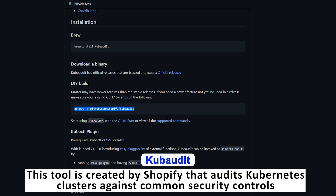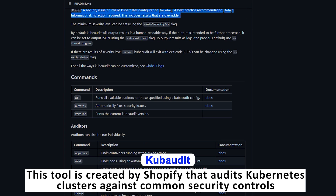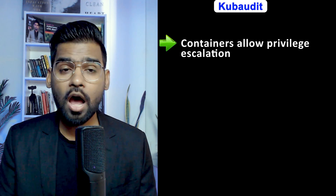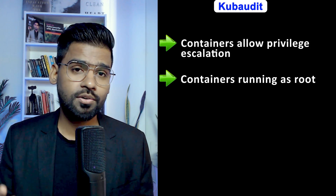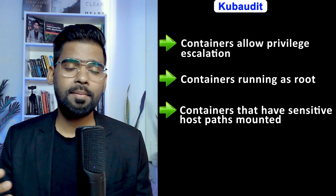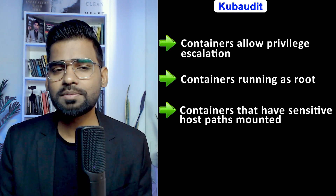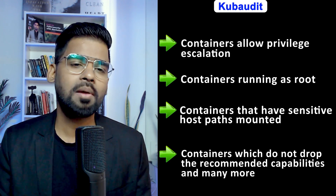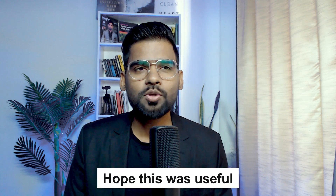Third is KubeAudit. This tool is created by Shopify and audits Kubernetes clusters against common security controls. There are currently 13 tests to assess whether containers allow privilege escalations, whether containers are running as root, whether containers have sensitive host paths mounted, whether containers do not drop any recommended capabilities, and many more.